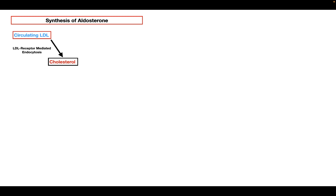Another source of cholesterol is acetate. Cells can actually synthesize cholesterol from acetate using de novo synthesis, with a number of enzymes catalyzing the series of reactions needed to convert acetate into cholesterol. So these are the two most important sources of cholesterol that cells use. After the cells get their cholesterol, they can use it to form corticosteroids like aldosterone.